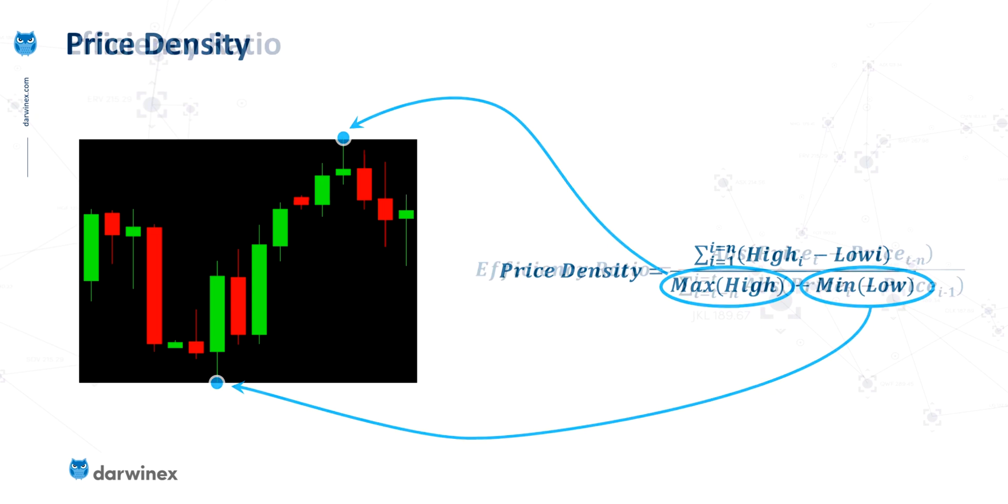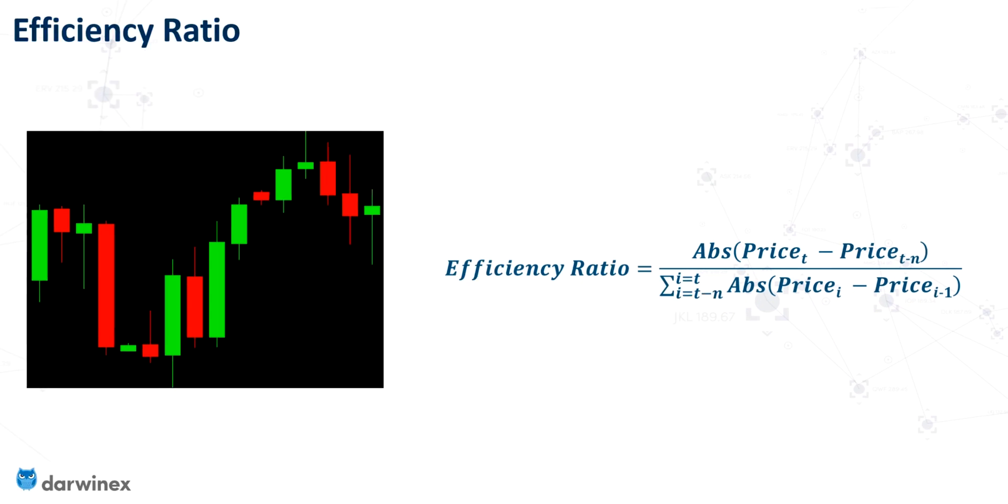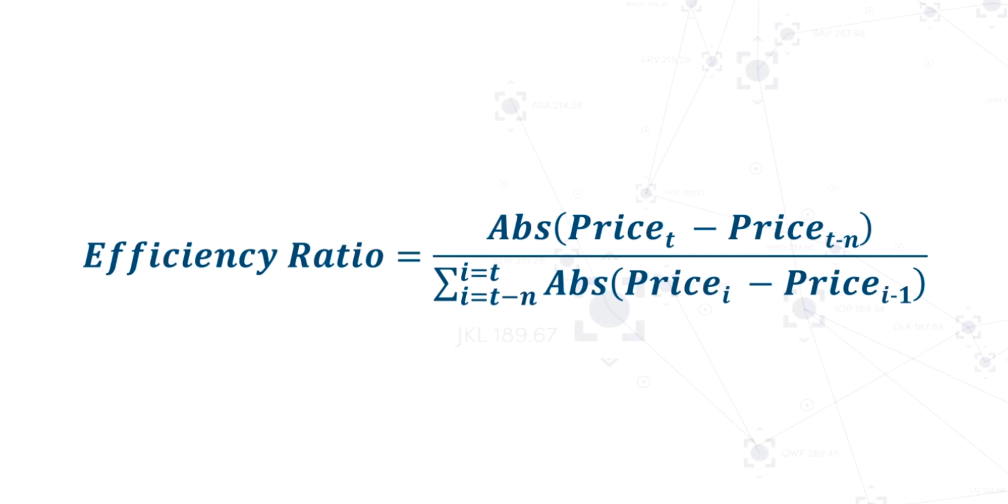So let's now look at how the efficiency ratio goes about this. And the first thing that you'll notice is that the individual price moves here are on the bottom as the denominator. And because of that, this calculation has to be interpreted in the opposite way.